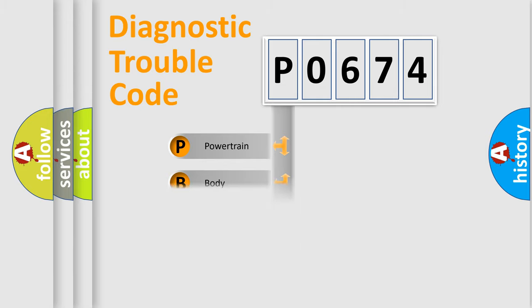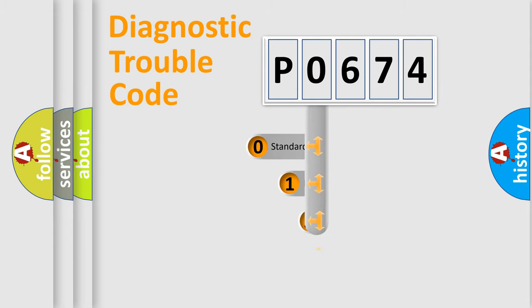Powertrain, Body, Chassis, Network. This distribution is defined in the first character code.